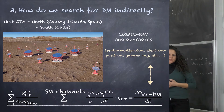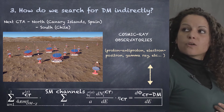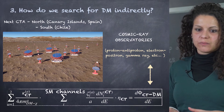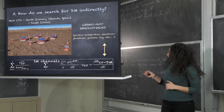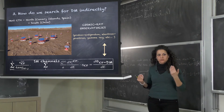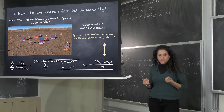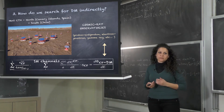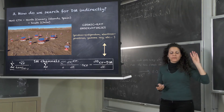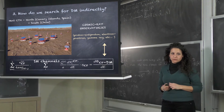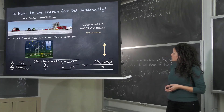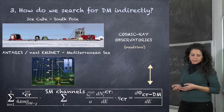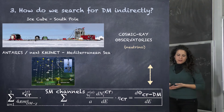The next experiment, CTA, is under construction now. It is a combination of two observatories: one in the Northern Hemisphere in the Canary Islands in Spain, and one in the Southern Hemisphere in Chile. Why two observatories? Because with the combination of both, we are able to cover the full sky in order to observe cosmic rays — something that is not a problem for satellite experiments, but for ground-based experiments you have a blind area of the sky. We also have neutrino telescopes: IceCube at the South Pole, ANTARES, and the upcoming KM3NeT in the Mediterranean Sea.